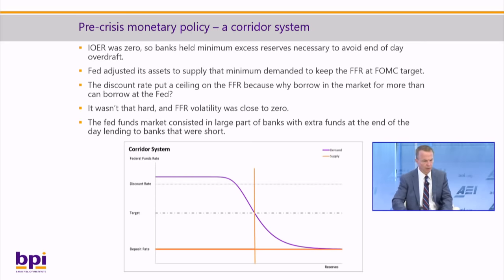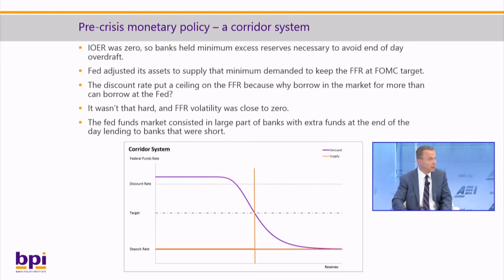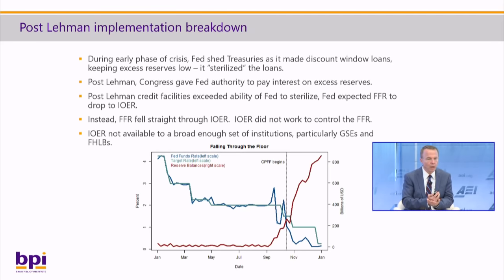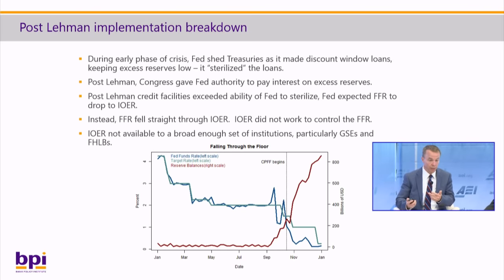There's a perception that conducting monetary policy was really incredibly complicated. In reality, the Fed funds market consisted largely of banks that had extra funds at the end of the day lending them to banks that needed extra funds — because overall banks wanted to keep their funds short. During the early phase of the crisis, the Fed made a lot of discount window loans but was able to keep excess reserves low by shedding treasury securities — sterilizing those loans — so it continued to conduct policy the way it had normally been conducting it.